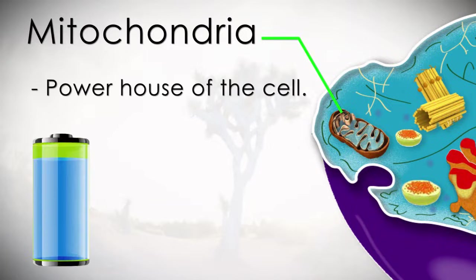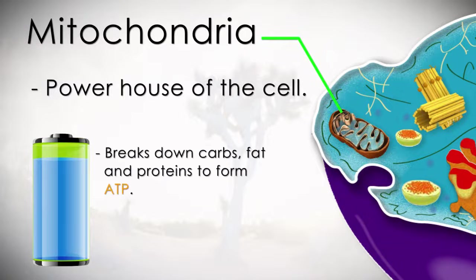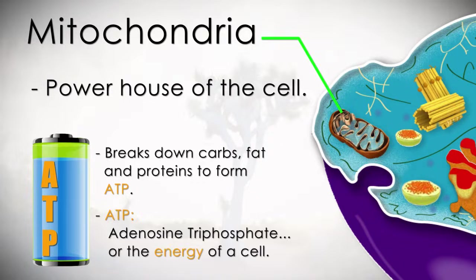The mitochondria is the powerhouse of the cell. It breaks down carbs, fat, and proteins to form ATP, otherwise known as adenosine triphosphate, or the energy of the cell.